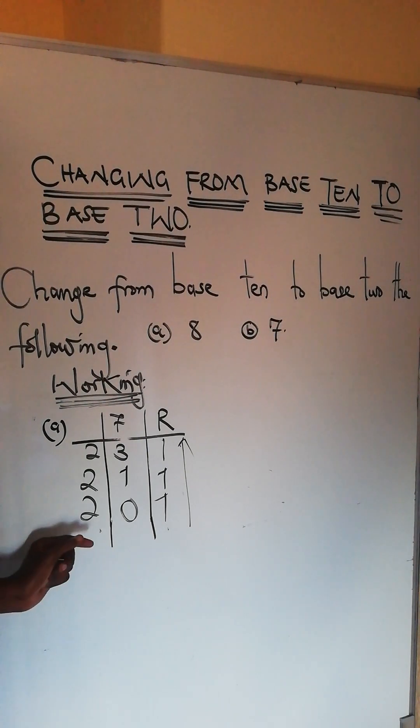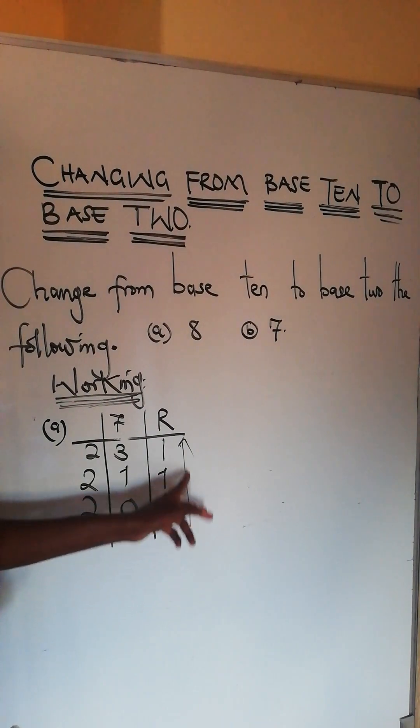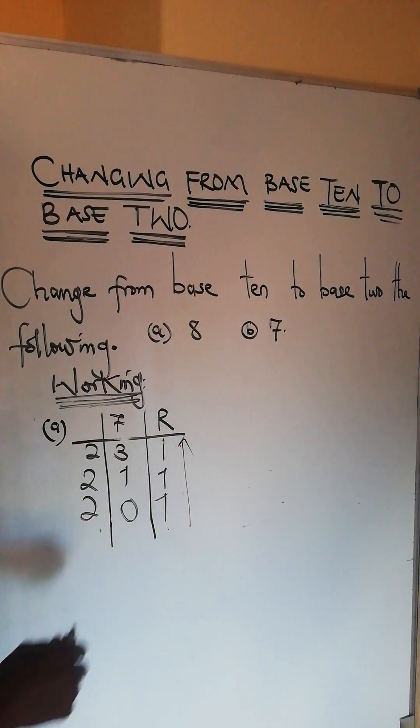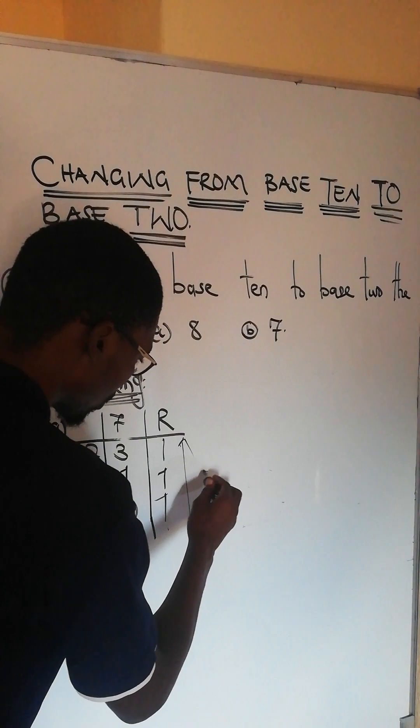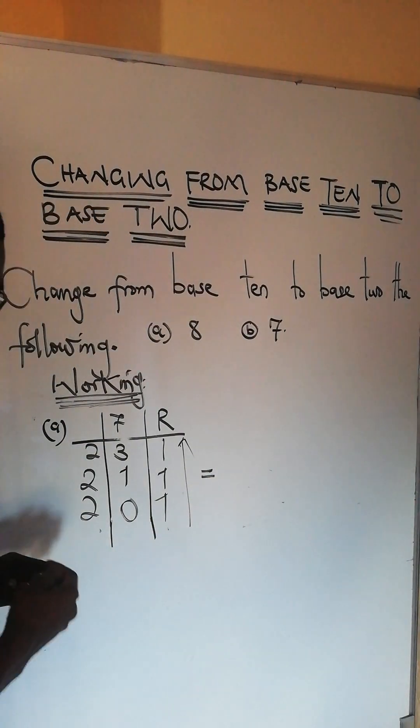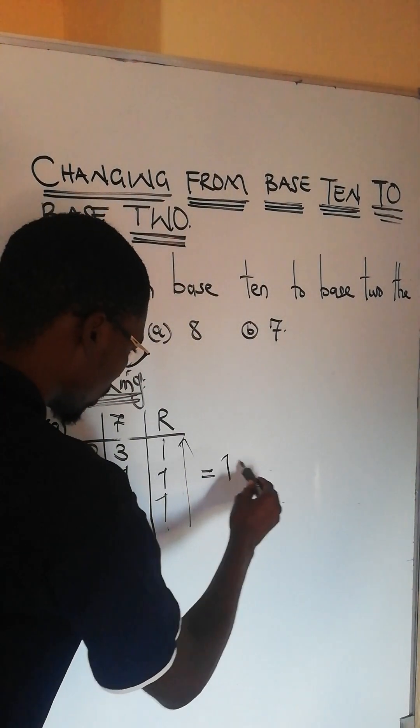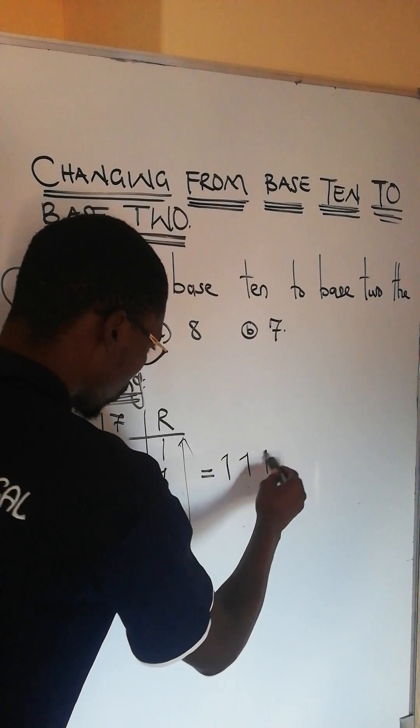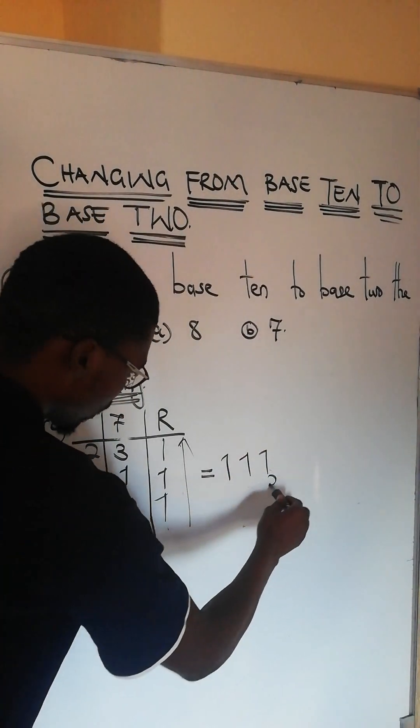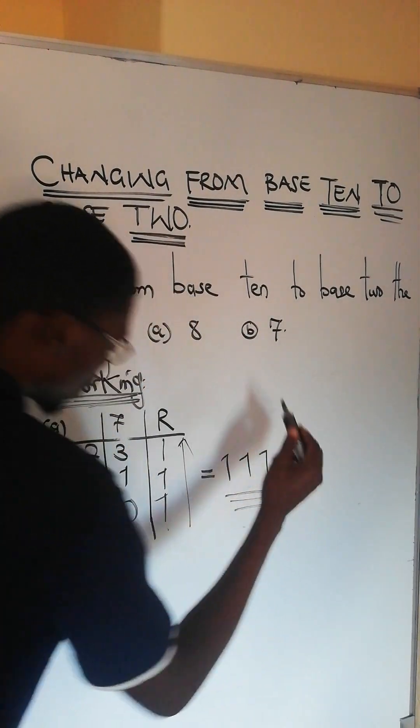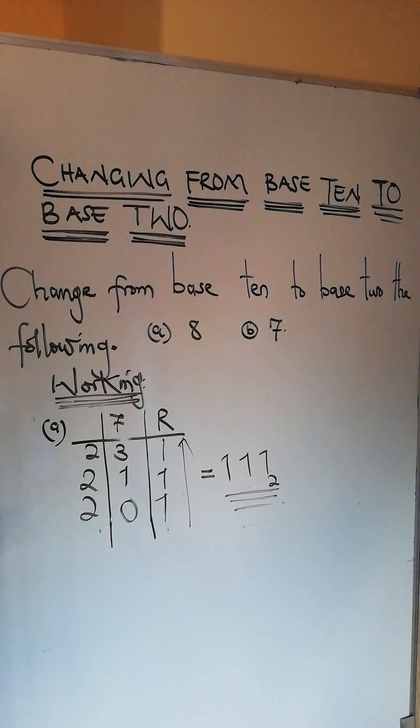You get values from the bottom up to the end there on the remainder. So that will give us 1, 1, and 1 base 2. This is what must be done.